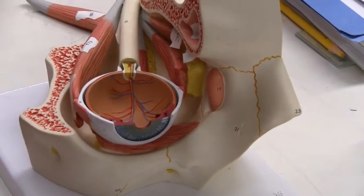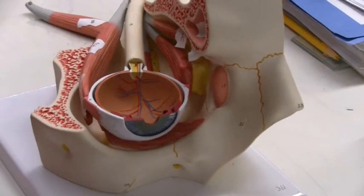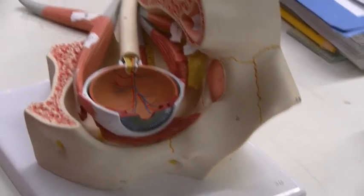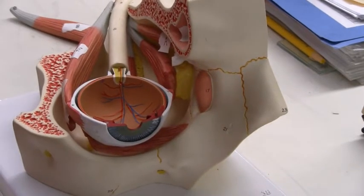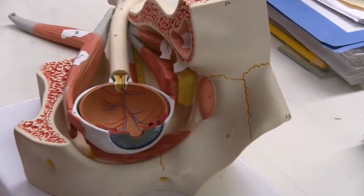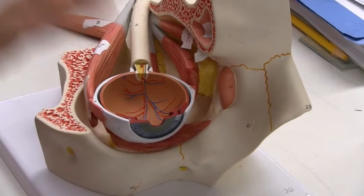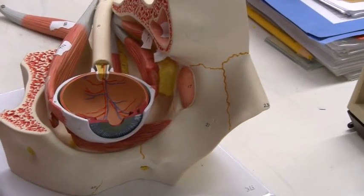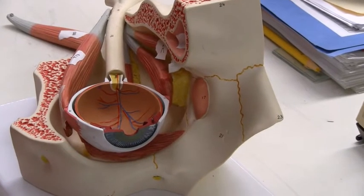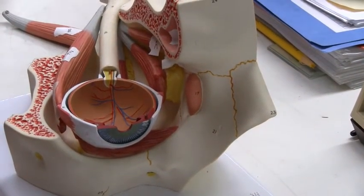So what makes aqueous humor? It's from the ciliary processes. And then it helps cleanse the eye. It goes through the pupil from the posterior chamber to the anterior chamber. And eventually it's reabsorbed into the scleral venous sinus or canal of Schlemm. Shouldn't have forgotten that one.